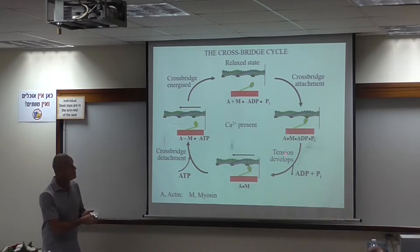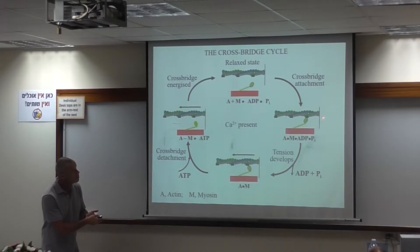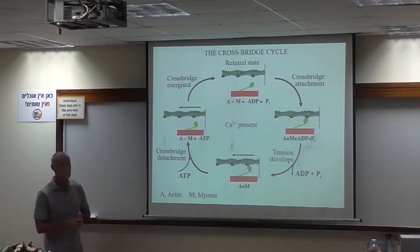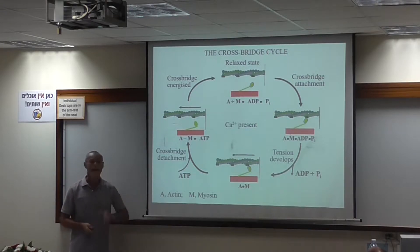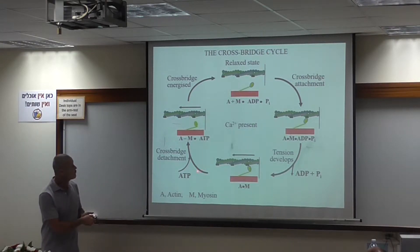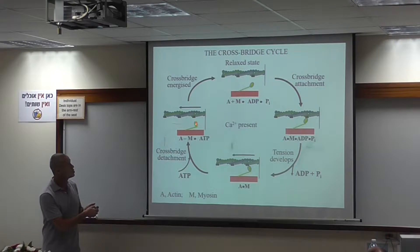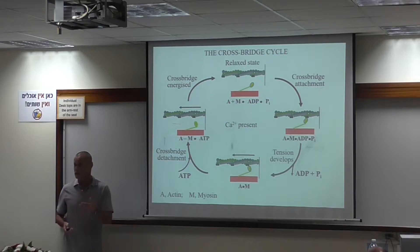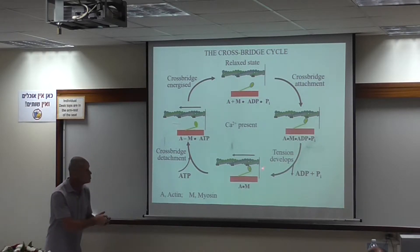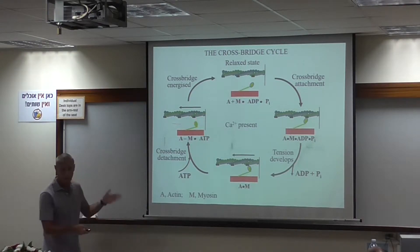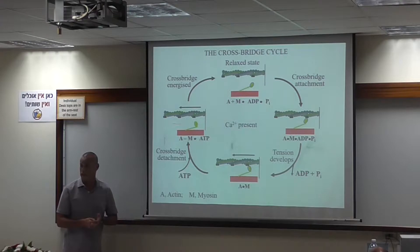Thereafter, ADP is released, and we have the shortening step, denoted here by the movement of the Z-disc closer to myosin. At the end of the shortening step, a fresh molecule of ATP is taken up. This causes dissociation of the myosin crossbridge head from actin, and then what happens depends on the situation. If calcium is still high, we simply repeat this process with the crossbridge binding to the next actin molecule. If calcium is low, we simply go back to the relaxed state.